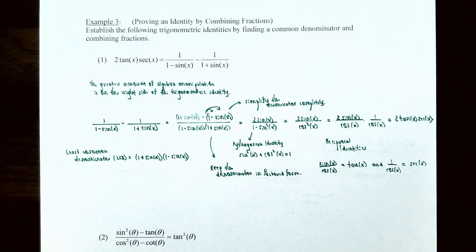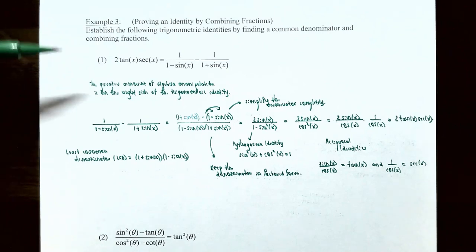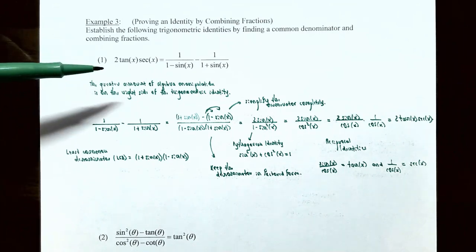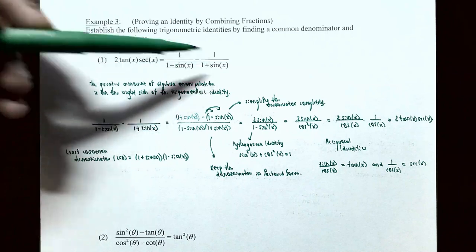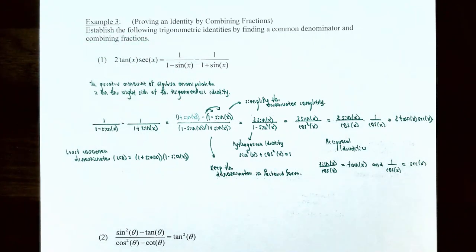Example 3: proving an identity by combining fractions. We'll establish the following trigonometric identities by finding a common denominator and combining fractions. For number 1, we're going to prove that 2 times tangent of x times secant of x equals 1 divided by (1 − sin x) minus 1 divided by (1 + sin x). Notice that the greater amount of algebra manipulation is on the right side, because you can form a common denominator with these two fractions and make it one fraction.